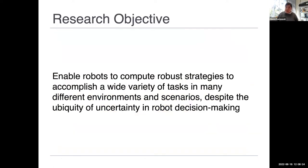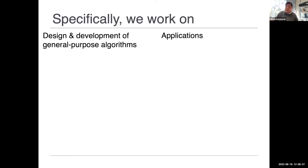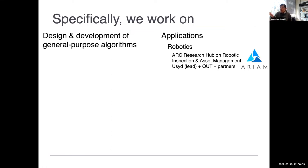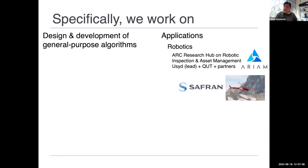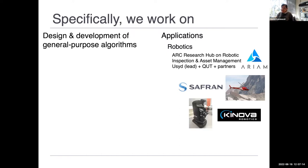All these problems seem quite different, but the question they pose is essentially similar: what strategy should this robot take now so that it can get good long-term outcomes, despite various types of uncertainty? Answering this question in a general manner is exactly the focus of our group. We look into both fundamental computing questions on algorithm design and computational representation, as well as applications in robotics, in collaboration with companies and other universities.